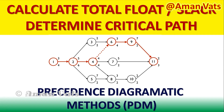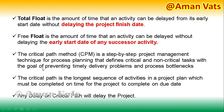Welcome back. We are in the last leg of this series. I have already explained forward pass, backward pass, how to calculate early start, early finish, late start, late finish, what is slack, what is float, total float, free float, and the structure of precedence diagramming method. Now I'll tell you how to calculate total float, total slack, and how to determine the critical path, finishing this series on precedence diagramming method.